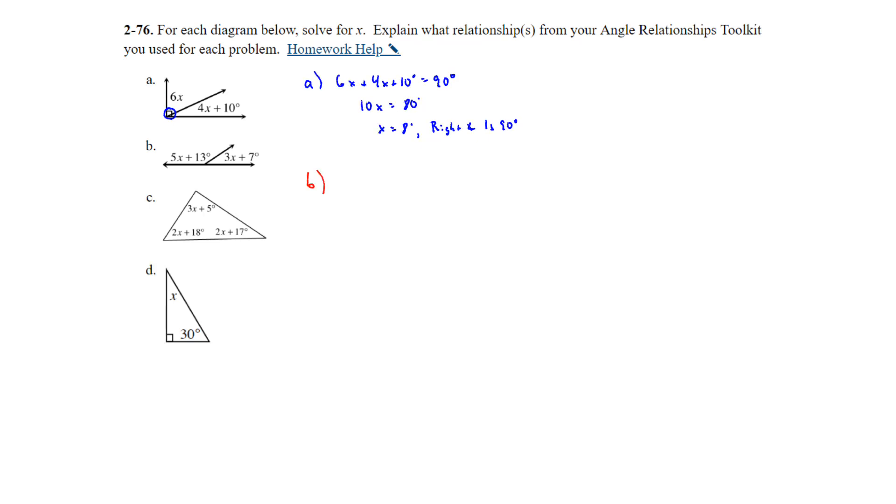Part B, we have a straight angle, forms a line, so we know that straight angles are supplementary. So we have 5x plus 13 degrees plus 3x plus 7 degrees is equal to 180 degrees. Combine your like terms. You get 8x plus 20 degrees is equal to 180 degrees. Subtract 20 degrees and you get 160 degrees, and then divide by 8. And you get x equals 20 degrees. And once again, we knew that because of it being a straight angle.